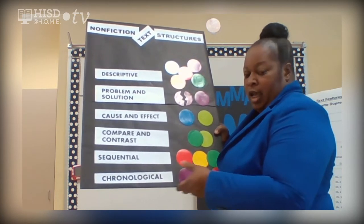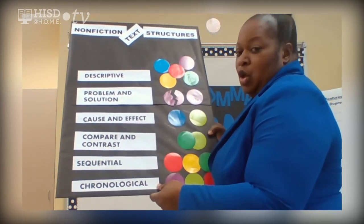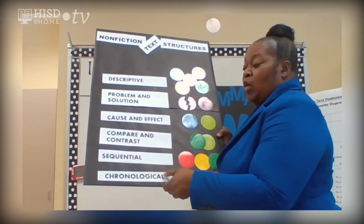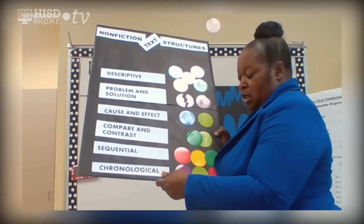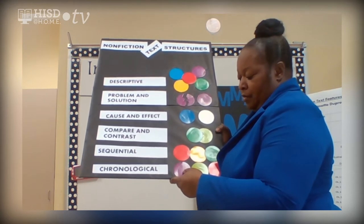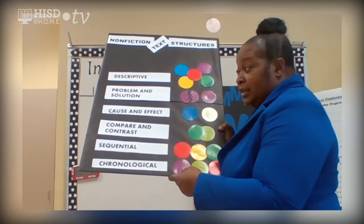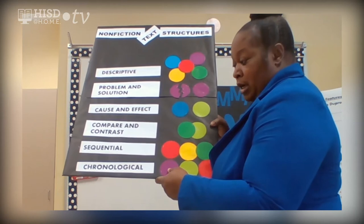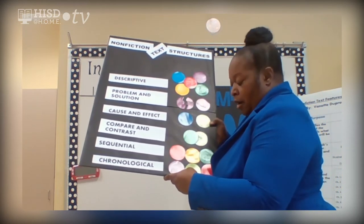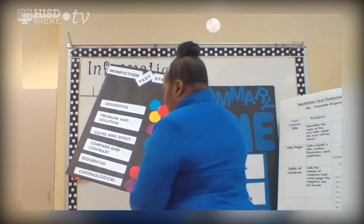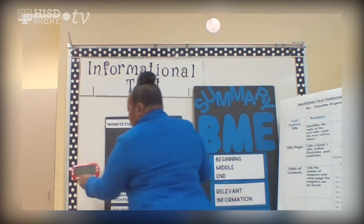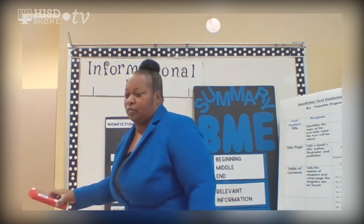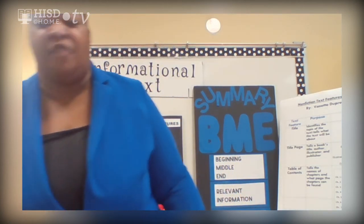And the last one: chronological. Chronological order is text that follows a sequence, but unlike sequential order, chronological order shows events using time. The time could be days, months, or minutes. For example: in the morning I woke up, in the afternoon I decided to go to work, in the evening I came home. That would be chronological order — yes, it follows a sequence, but it involves time as well.